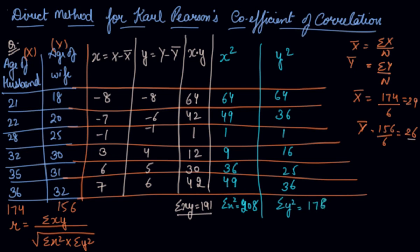Now we have got everything. We will put this into the formula. Summation xy is 191, under root summation x square is 208 into summation y square is 178. So we will get 191 divided by under root 37024.